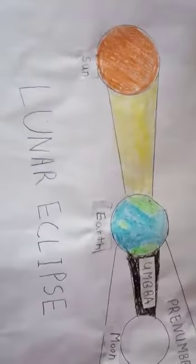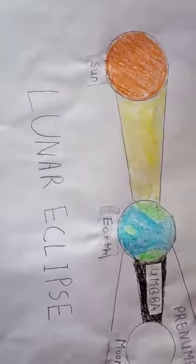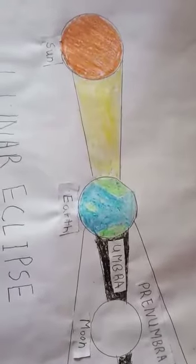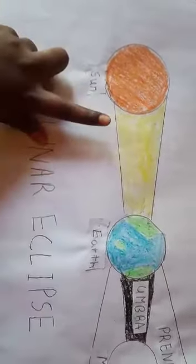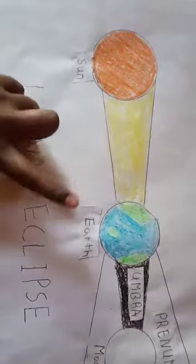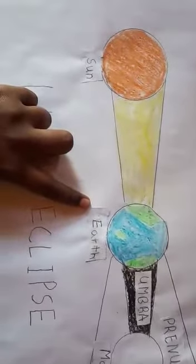It happens when the moon is exactly on the opposite side of the earth to the sun. The moon when passing through the earth's shadow.